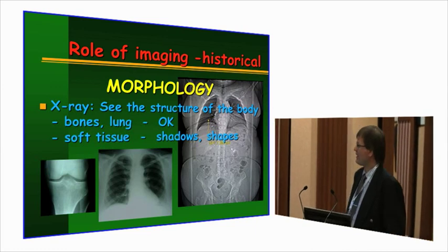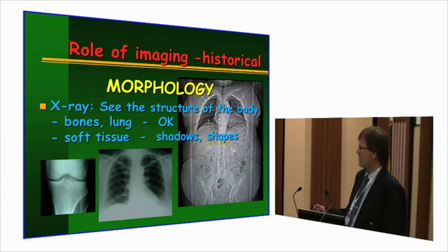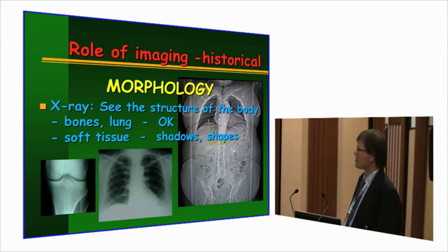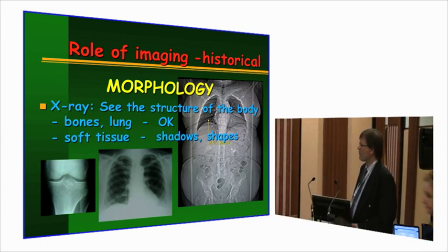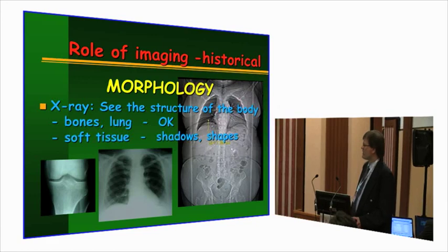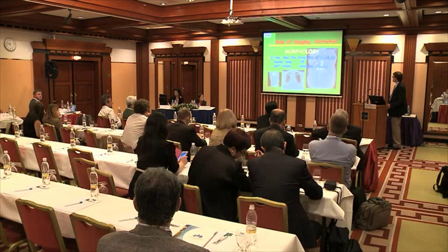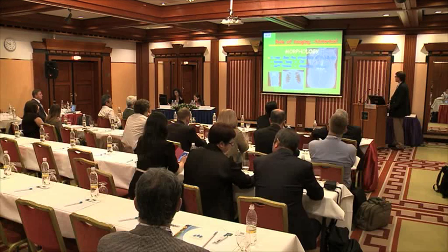I'd like to briefly introduce what happens in imaging diagnostics. It's just a little more than 100 years since we gained the ability to see anything of the body's structure with X-rays. Everything was about morphology, and still today for bones and lung it's a basic tool. But as you can see from this CT scout view, from soft tissues we don't have good resolution.